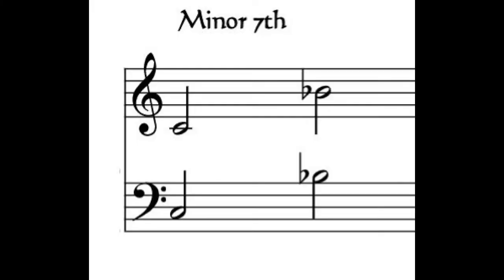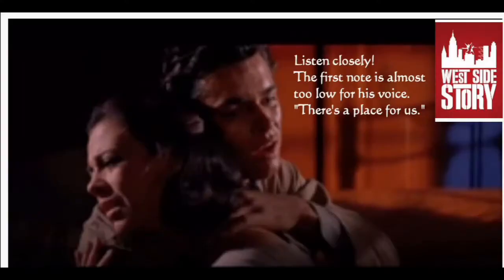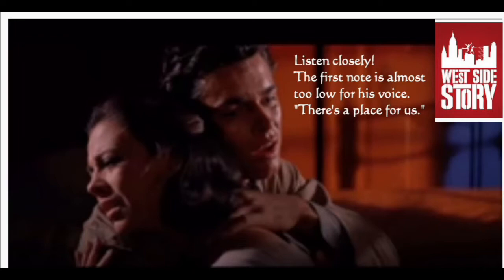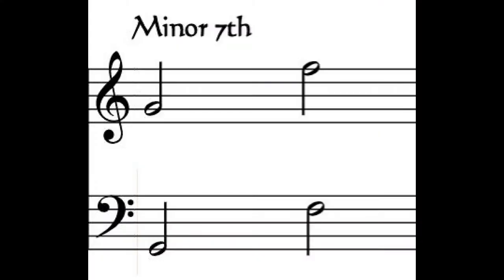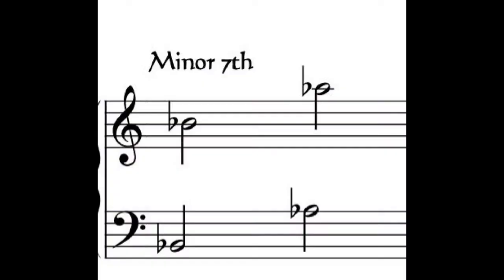The next interval we're going to talk about is a minor seventh. Starting on C, a minor seventh above that is a B-flat. This also comes from West Side Story — another song called Somewhere. Let's put it in some other keys. If we start on G, then a minor seventh above that becomes F natural. If we go to B-flat, then a minor seventh above that is A-flat.